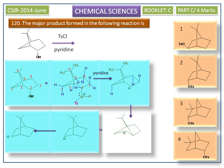This carbocation then reacts with the p-toluenesulfonic acid, giving the tosylated product.